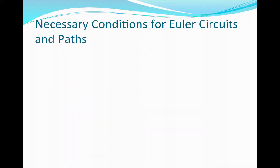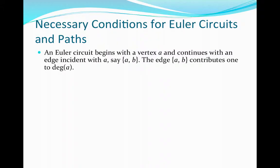We know that for an Euler circuit we need to begin at a particular vertex — let's say vertex A. We need to travel each edge exactly once, so from vertex A we choose one edge incident with it, let's say the edge AB. This edge contributes 1 to the degree of A.